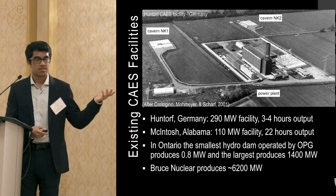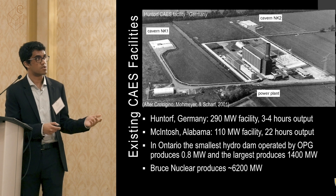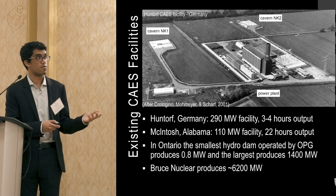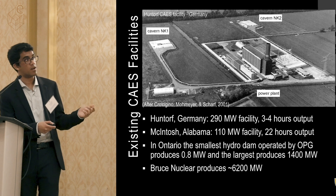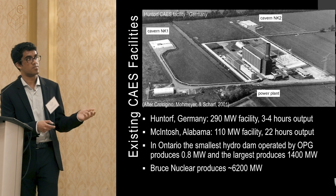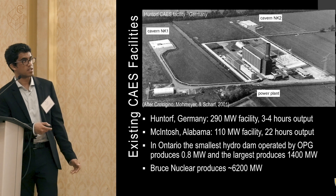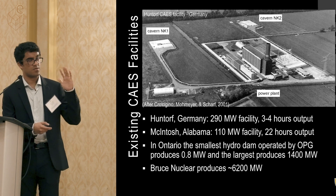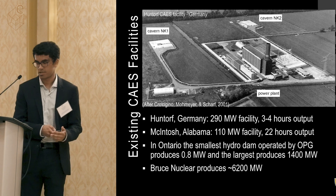The nice thing about CAES is that it's proven technology — it's been around for about 30 years. In Huntorf, Germany, there's a 290 megawatt facility delivering power for three to four hours of output. In McIntosh, Alabama, there's a 110 megawatt facility delivering 22 hours of output. For context, OPG's smallest hydroelectric dam is 0.8 gigawatts, the largest is about 1.4 gigawatts, and Bruce Nuclear — northwest of us — produces 6.2 gigawatts.